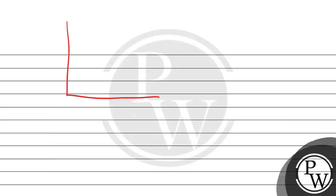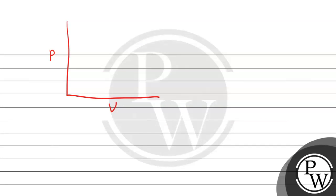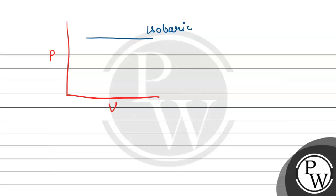Let us look at the pressure-volume graph. The initial state is the same and the final volume is the same for all processes. For the isobaric process, pressure remains constant, so we have a horizontal line, and the volume increases along the x-axis. This represents the isobaric process on the PV graph.